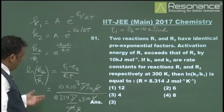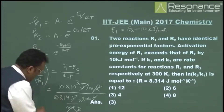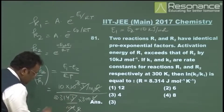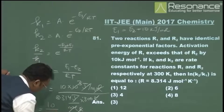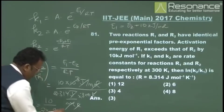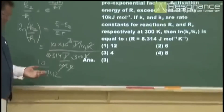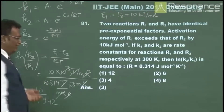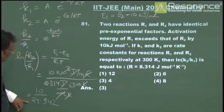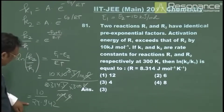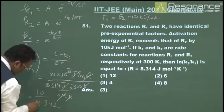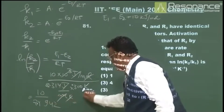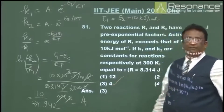Calculating: 8.314 × 300 = 2494.2, approximately 2.5 × 10³. So we get 10,000 / 2494.2, which is 10 / 2.5 = 4. The correct answer is 4.